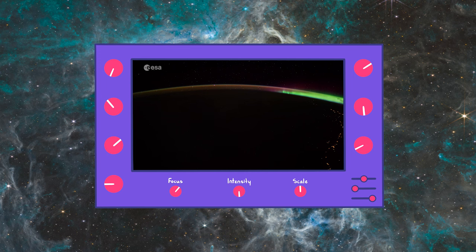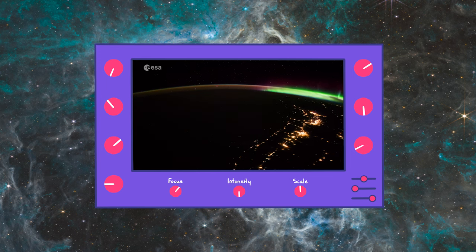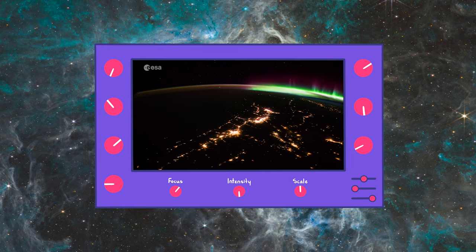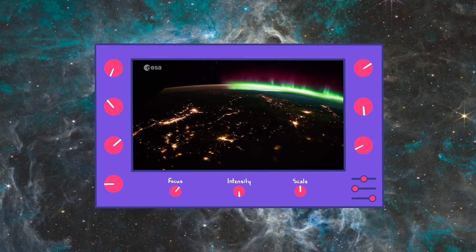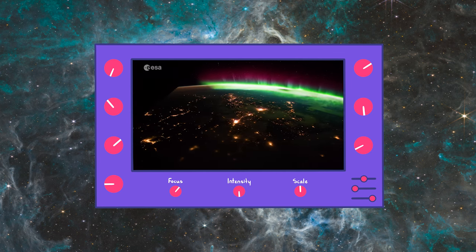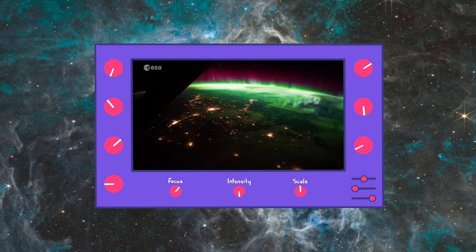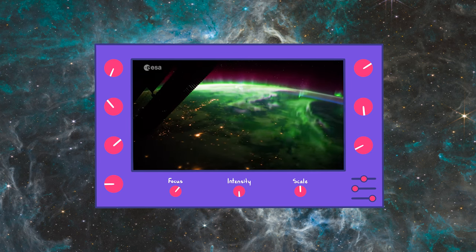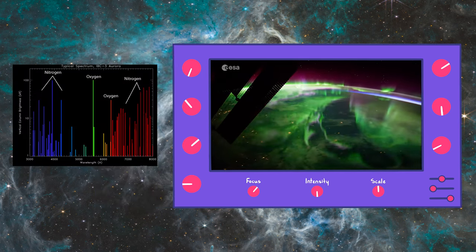This is an aurora. It occurs when charged particles from the sun enter Earth's atmosphere and excite the electrons within its gaseous particles. The composition of our atmosphere is mainly nitrogen and oxygen, therefore the wavelengths of light we see are primarily from these two atomic line spectra.